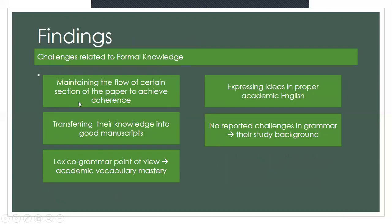In terms of the findings, there are challenges faced by graduate students in writing for scholarly publication. Starting with formal knowledge-related challenges: students reported facing barriers in maintaining the flow of certain sections of the paper to achieve coherence, and found it very difficult to transfer their knowledge into good manuscripts. Knowledge and practice are two different things — knowledge is in the mind, while practice is the actual writing process and product.